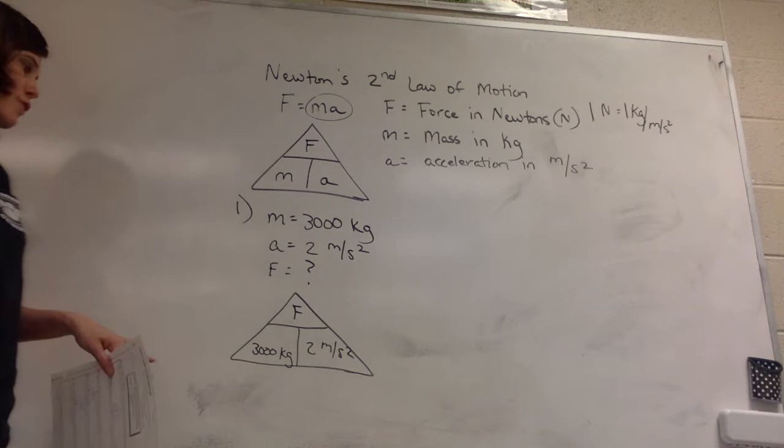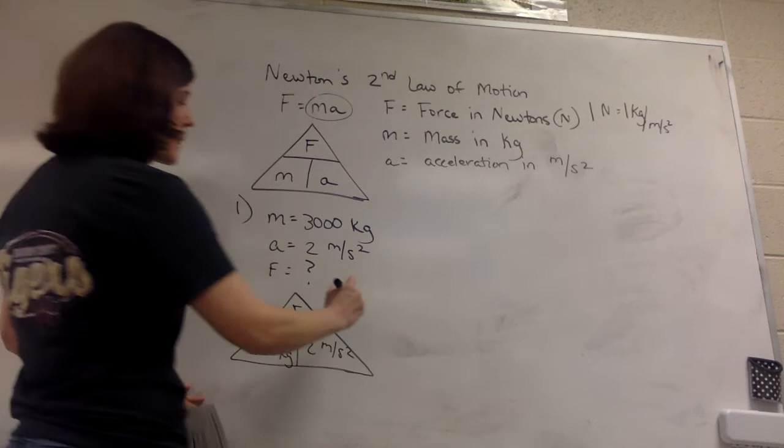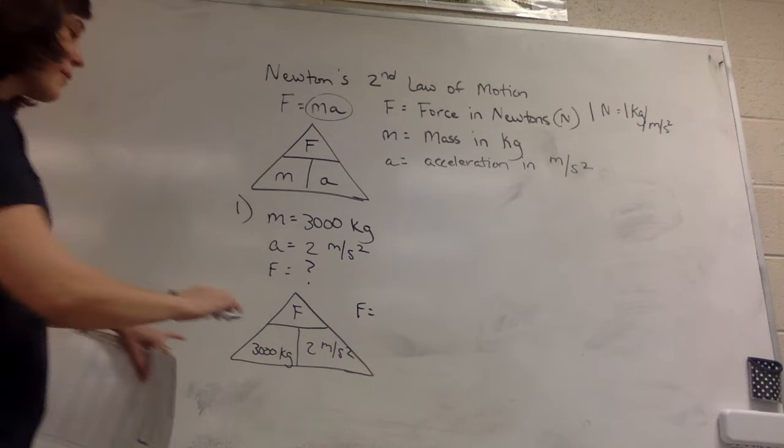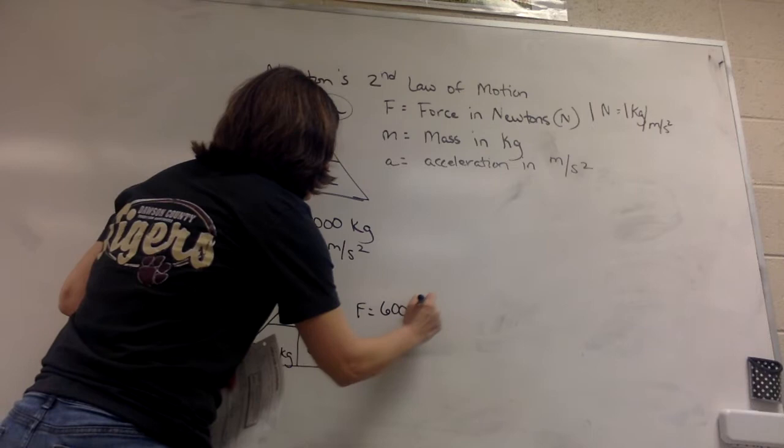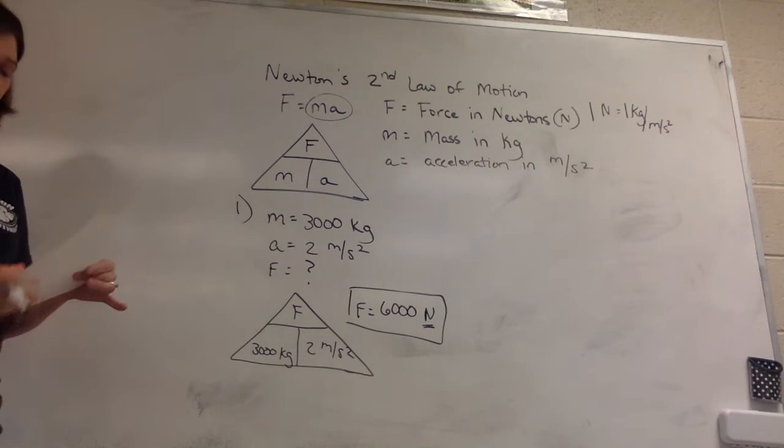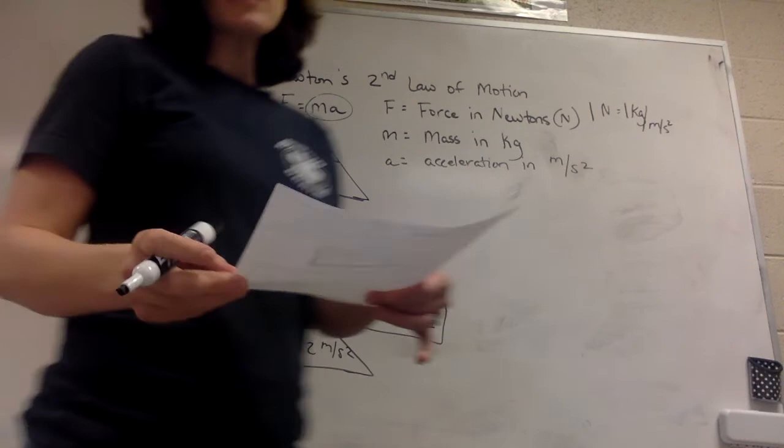Remember, in the triangle if two numbers are side by side together, that means you will multiply. So to find the force of this car, I'm going to take 3,000 times 2, so I will end up with 6,000 Newtons, because a Newton is always going to be your unit of force as the answer to this problem. Okay, so pretty simple.